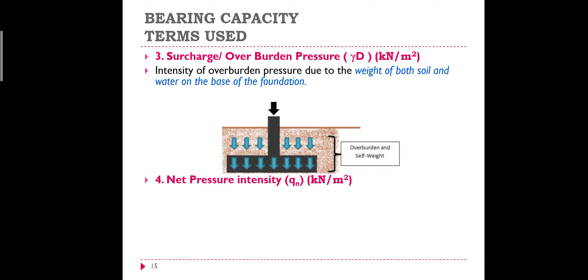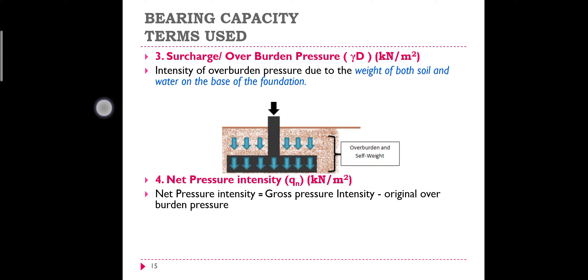The net pressure intensity: from the gross pressure intensity, which is the total pressure acting on the base of the footing, we are going to subtract something to get the net pressure intensity. Net pressure intensity is nothing but gross pressure intensity minus overburden pressure. We should subtract the overburden pressure, which is nothing but γD.